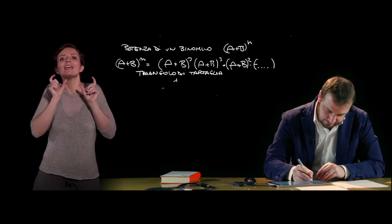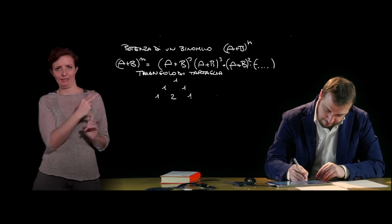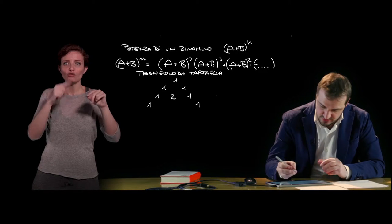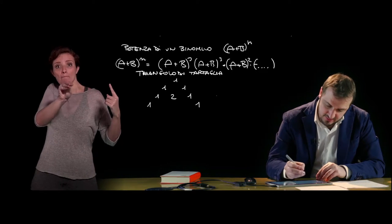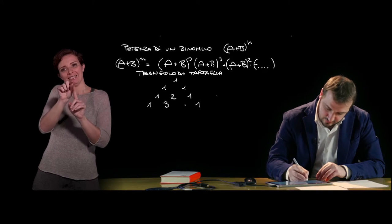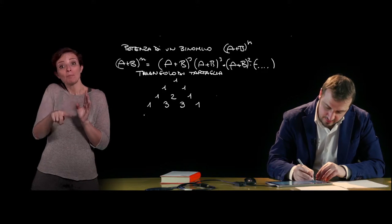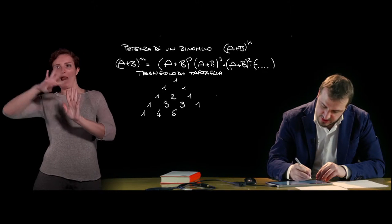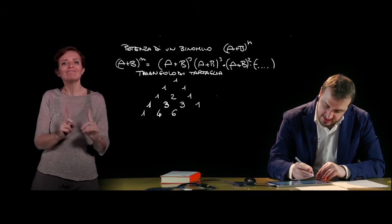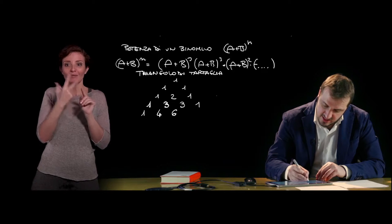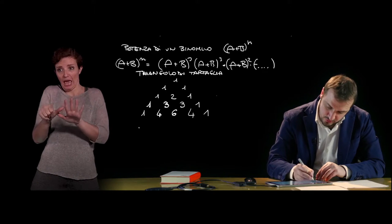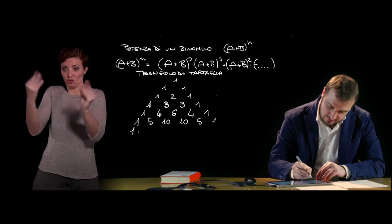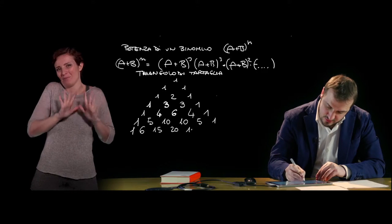Let's represent it here. You can see that at the edges, the oblique sides of this triangle are always characterized by the number 1. In the middle appear other coefficients that will be attributed to the various power expansions. These coefficients are those of the intermediate terms of the expansion of the square, the cube, the fourth power, and so on. They are obtained by summing the adjacent terms from the previous row — for example, 1+3=4, 3+3=6, 3+1=4. Going further down: 1, 5, 10, 10, 5, 1.